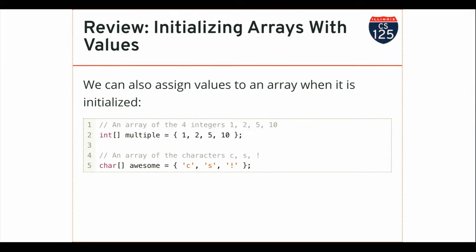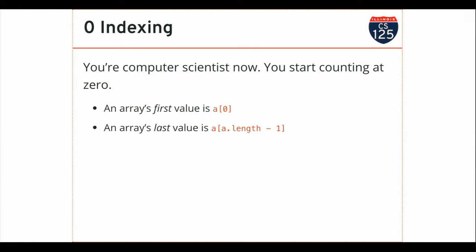I can assign values to an array when it's initialized using this syntax — that's a review from last time. Computer scientists start counting at zero — that's how we operate. There's actually a really good reason for this having to do with how data is stored in computer memory. The first value in an array is at index zero, and here's how to access it using bracket notation: I start with the name of the array — in this case 'A' — and inside the brackets I tell Java the index I want. I can either get or set the value this way.